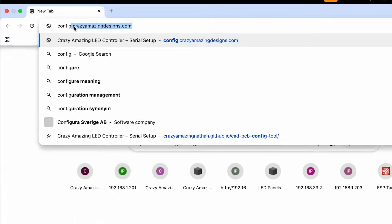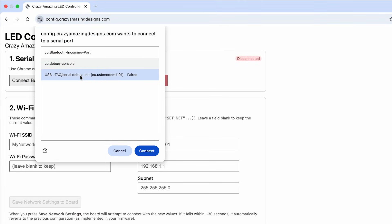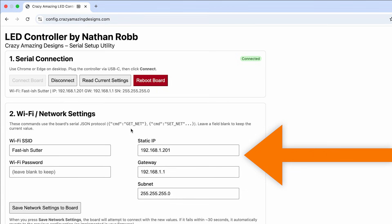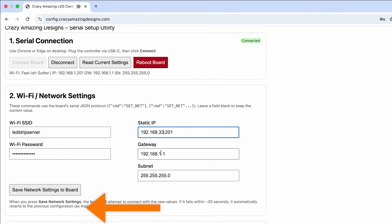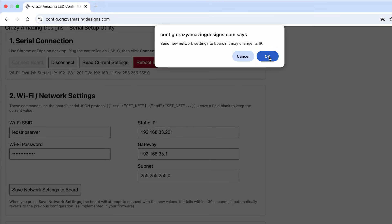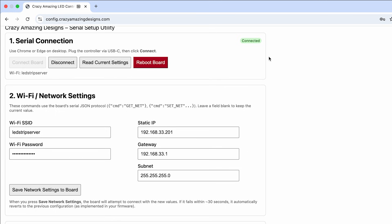Now, go to config.crazyamazingdesigns.com and select connect board. Here you can set the Wi-Fi SSID, password, IP address, gateway, and subnet information. When finished, push save network settings to board. Push OK and once complete, this board will be able to connect to your Wi-Fi.